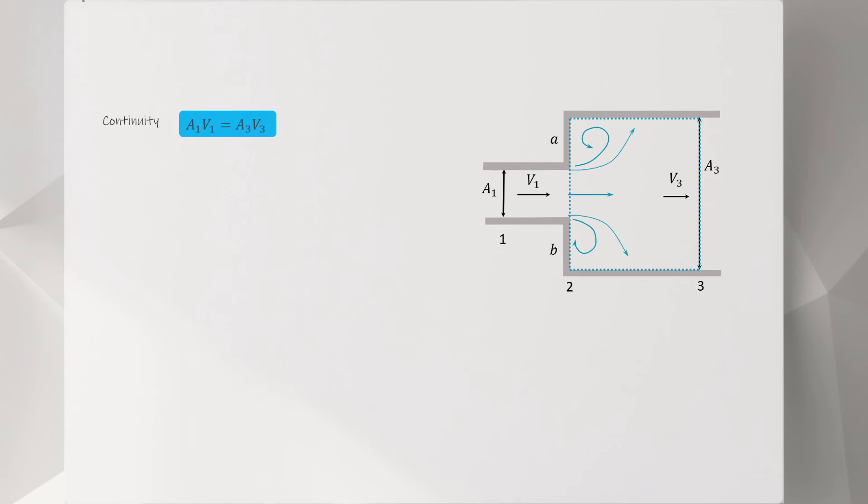We can then apply the continuity, the momentum and the energy equation to the control volume and have these simple formulations. Combining these three equations and solving for the head loss, we can obtain the simple relation for the loss coefficient that is a direct relation connected to the ratio of the two cross-sectional areas.